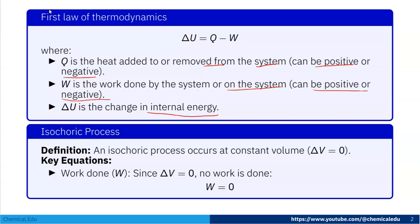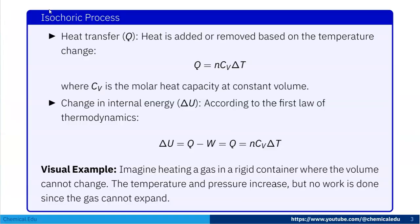Now the definition of the isochoric process: it occurs at constant volume, so delta V is equal to zero. Since delta V is zero, no work is done, meaning W equals zero. Heat transfer Q is added or removed based on temperature change, so Q equals N C_V delta T, where C_V is the molar heat capacity at constant volume. From the first law, since W is zero, delta U equals Q equals N C_V delta T.